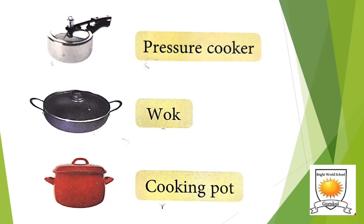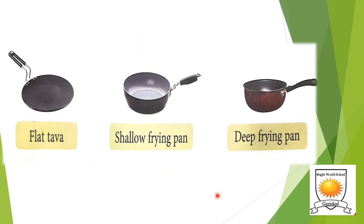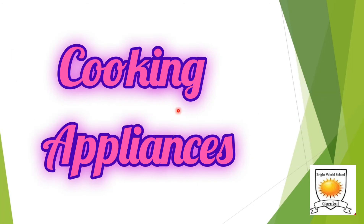Now we will look at our next utensil: the pan. There are three types of frying pans — flat tawa, shallow frying pan, and deep frying pan. A flat tawa is used to make chapati and dosa. A shallow frying pan is used to make cutlets or steam-fry vegetables. A deep frying pan is used to fry potatoes, make samosas, or even fry puris.